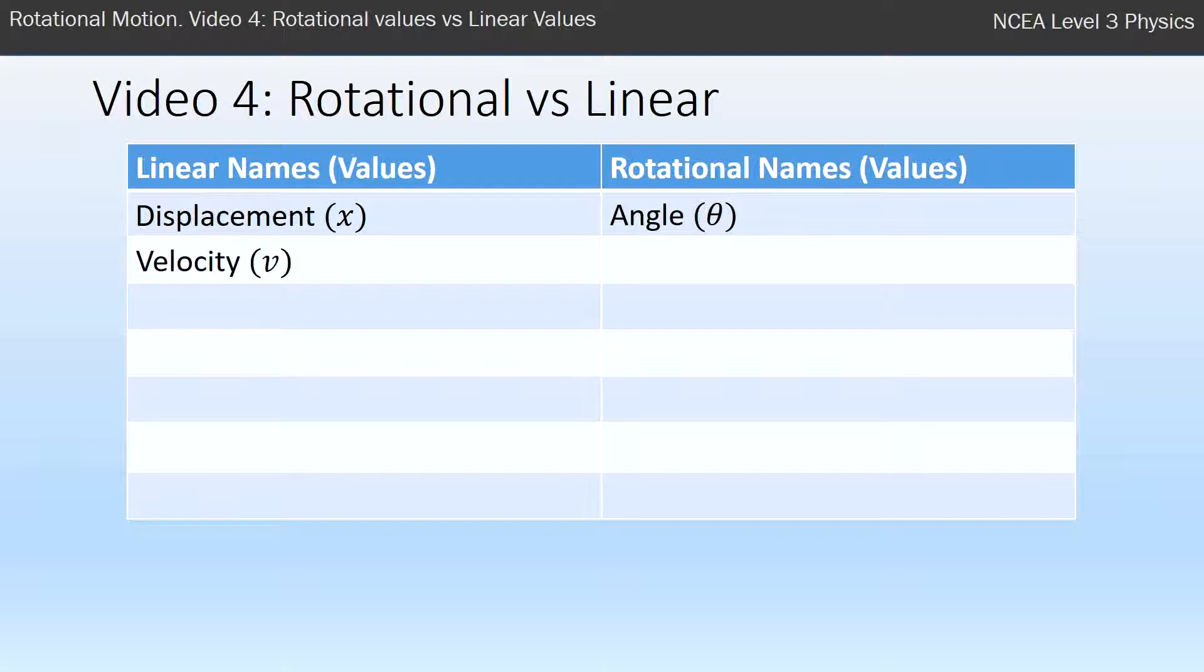We have velocity, which is displacement moved per time or meters per second. This year we're looking at the rotational equivalent of that, which is angular velocity. We saw in the last video the other name for it is angular frequency, which we interchange with the symbol omega.